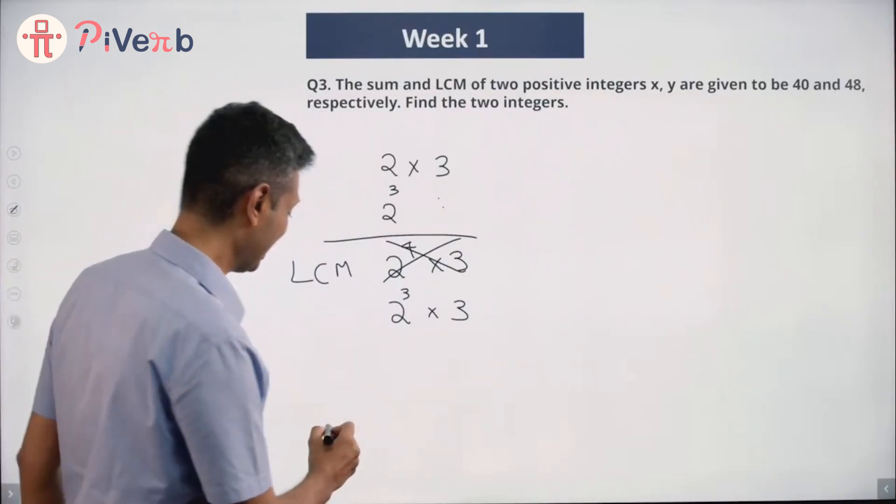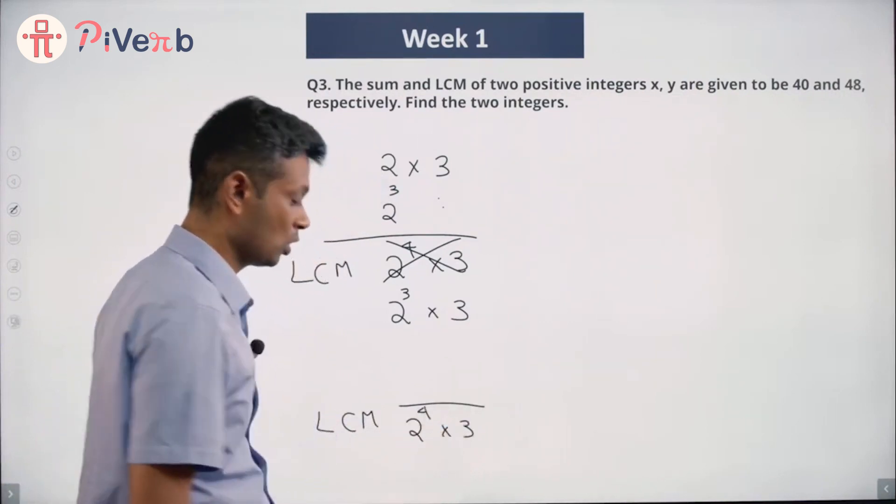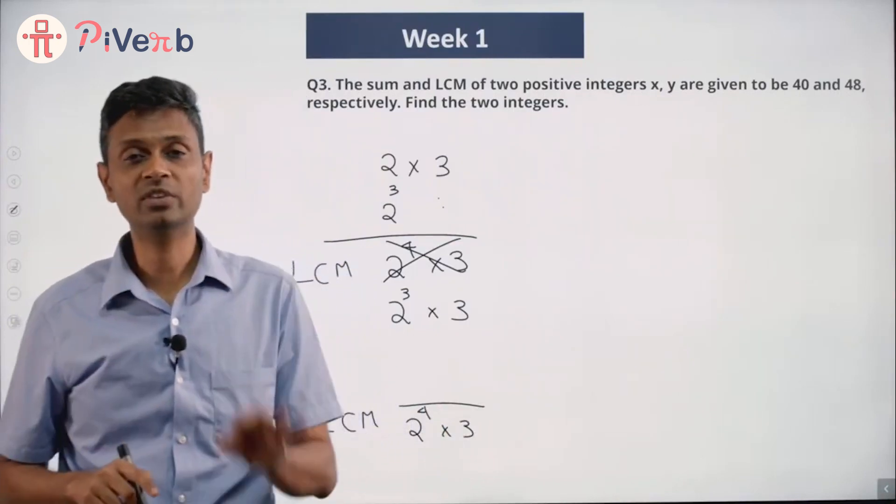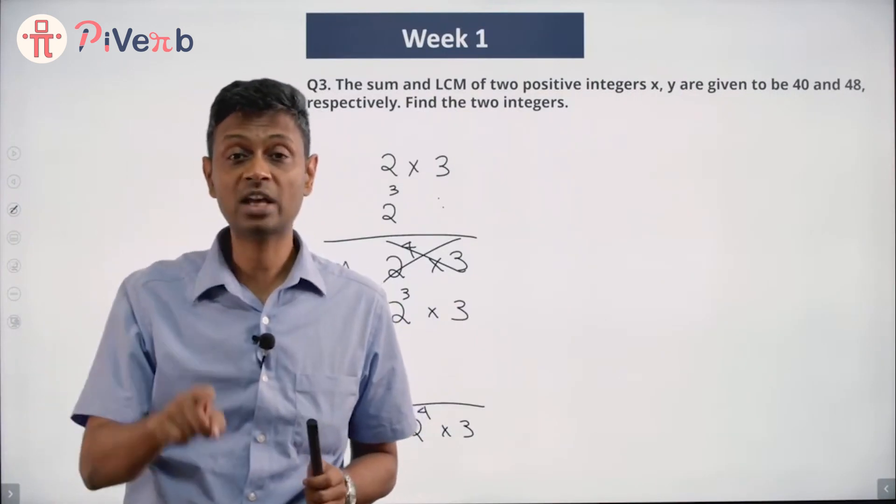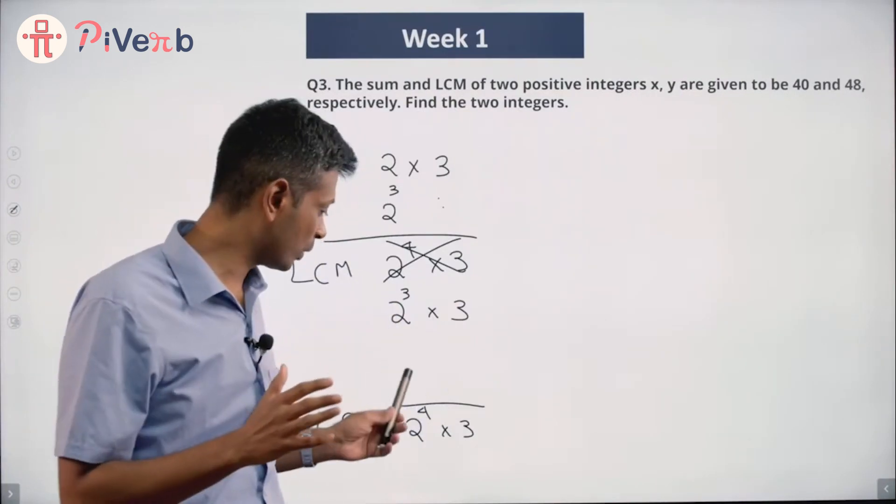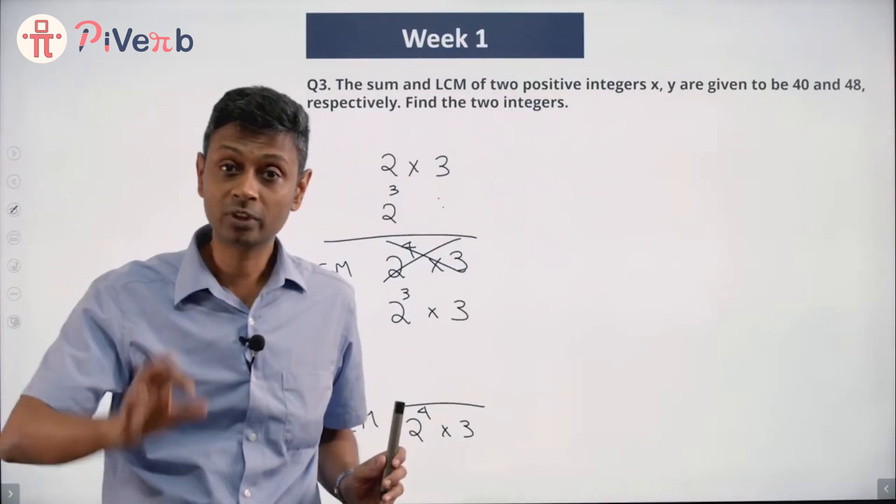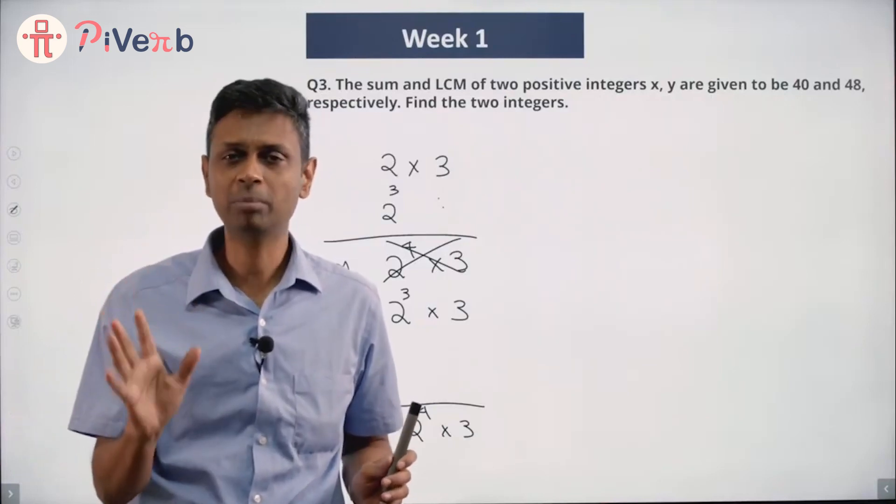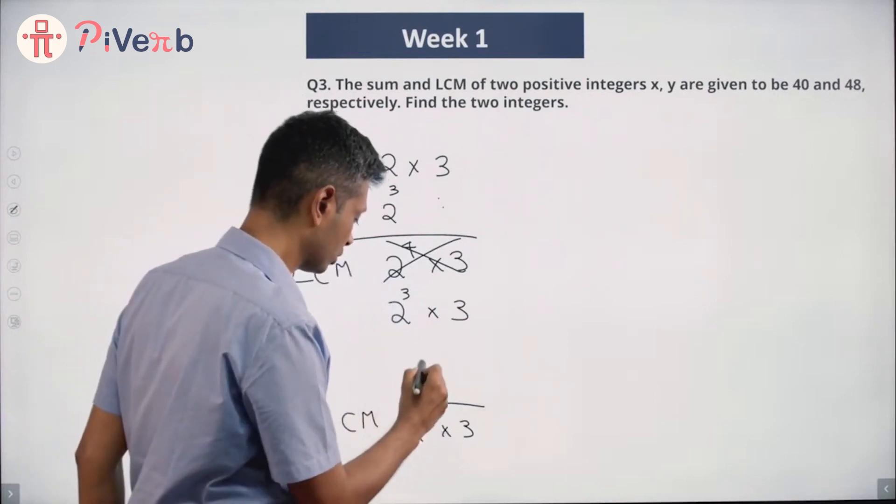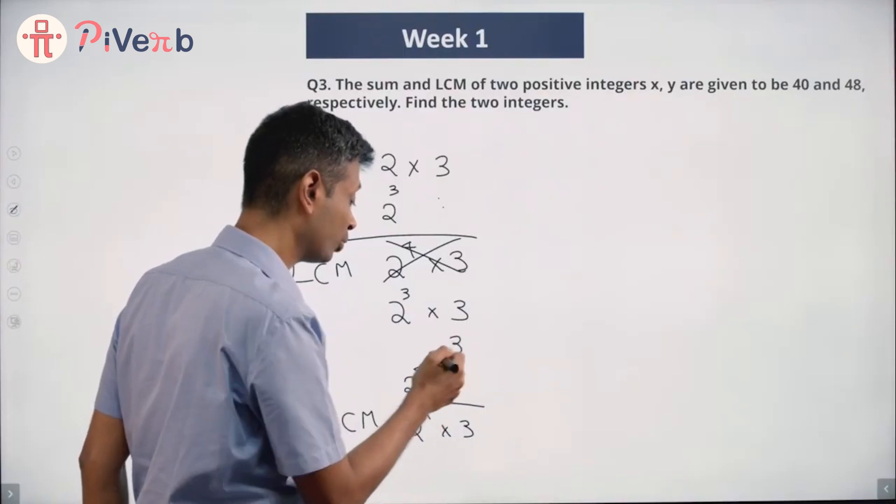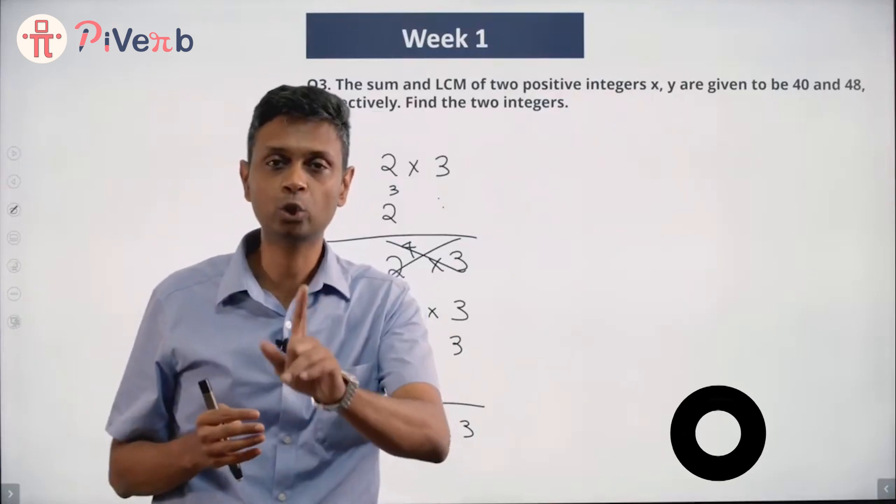This gives me a beautiful clue. If I want my LCM to be 2 to the power 4 into 3, one of the numbers, at least one of the numbers, has to have a 3. Otherwise, I cannot have a 3 here. At least one of the numbers has to have 2 to the power 4. If I have 2 and 2 squared, the LCM will have only 2 squared. If I have 2 squared and 2 cubed, LCM will have only 2 cubed. LCM has 2 to the power 4 in it, which means at least one of the numbers should have 2 to the power 4 in it. So one of the numbers has 2 to the power 4 in it, one of the numbers has a 3 in it. Could be the same number that has both. The other number could have 2 squared sitting in it. Definitely, one of the numbers has 2 to the power 4 in it.